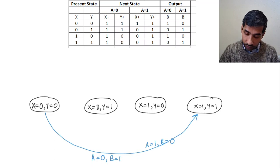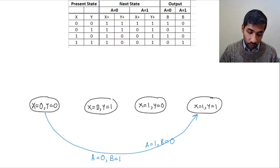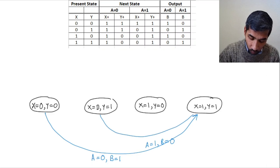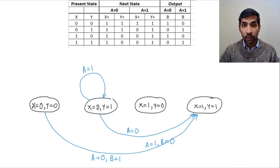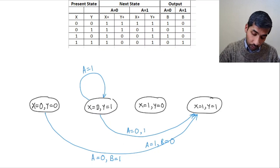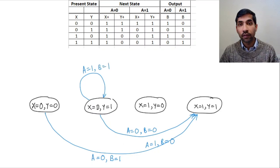Now, what happens when you are in state (0,1)? When you are in state (0,1), you go to state (1,1) if a is 0, and you remain in this state if a equal to 1. So you draw a transition to (1,1) when a equal to 0, and a self-loop when a equal to 1. The outputs corresponding to both these cases: if a equal to 0, your output is b equal to 0; if a is 1, then b is also equal to 1.